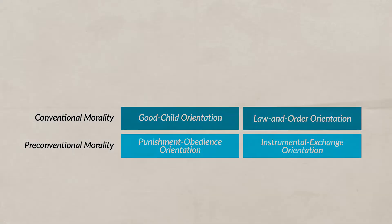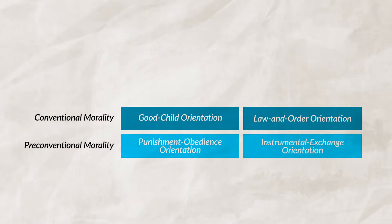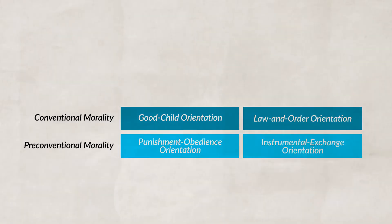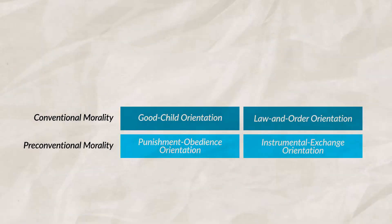Next is law and order orientation. Morality is set by what is legal or what rules are in place. These rules help enforce social order and must be good.